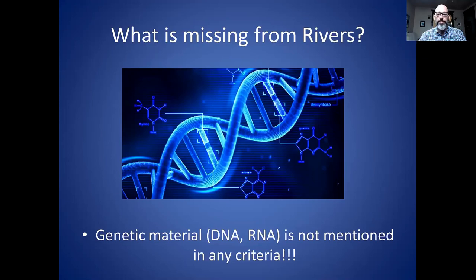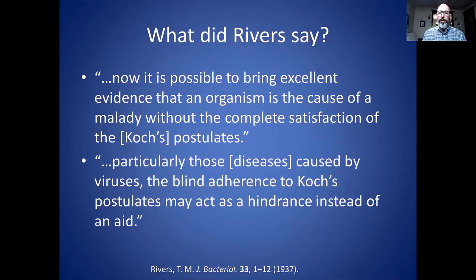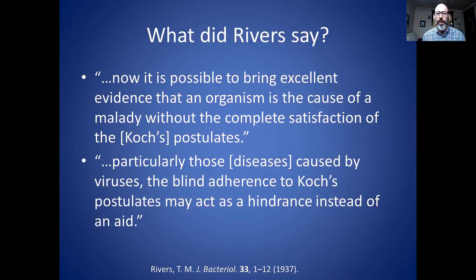I went and looked at Rivers' article from 1937, where he laid out these six criteria, and found some interesting quotes. First: 'It is possible to bring excellent evidence that an organism is the cause of a malady without complete satisfaction of Koch's postulates.' So he's saying you can skip the steps not included in his criteria and still prove causation. Second: 'Particularly for diseases caused by viruses, blind adherence to Koch's postulates may act as a hindrance instead of an aid.' This indicates he may have been looking for a shortcut, making it easier to prove a virus is the cause of disease. I'll still accept Rivers' criteria as valid.